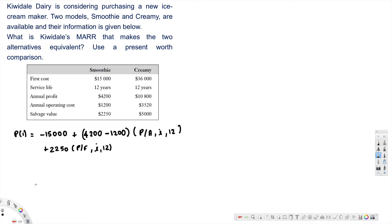Okay, now let's do it for the second one. This is present worth two, PW2. Here we have Creamy for 12 years. Present worth two is also 12 years. First cost is $36,000, so negative $36,000. Plus, we have annual profit $10,800, so positive $10,800.